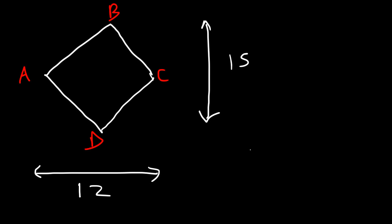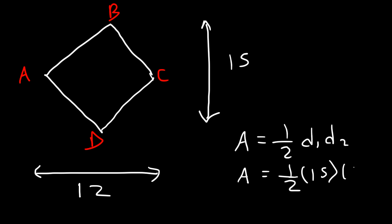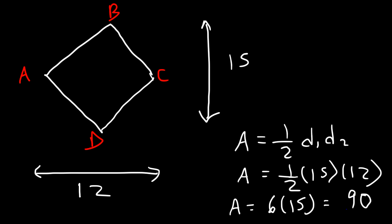The area of a rhombus is one-half times the product of the two diagonals. So the first diagonal is 15 and the second is 12. One-half of 12 is 6, and 6 times 15: 6 times 10 is 60, 6 times 5 is 30, so 60 plus 30 is 90. That's how you calculate the area of a rhombus.